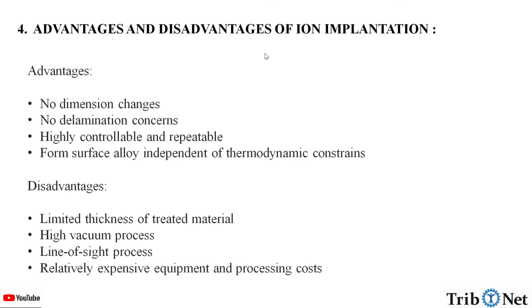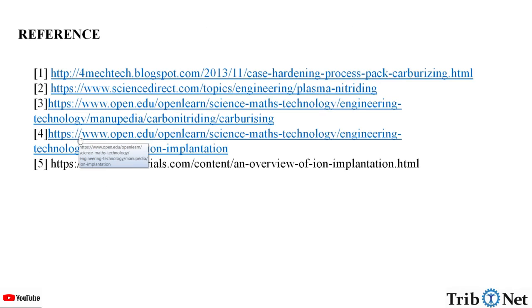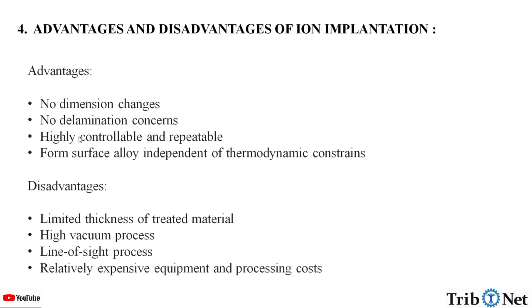What are the advantages and disadvantages of ion implantation? Advantages: no dimension changes, no delamination concerns, highly controllable and repeatable, and it can form a surface alloy independent of thermodynamic constraints.